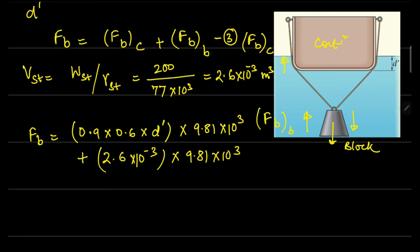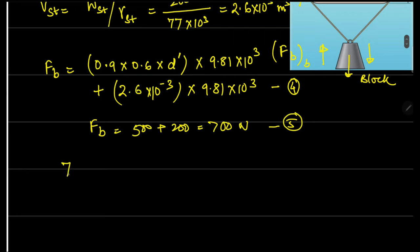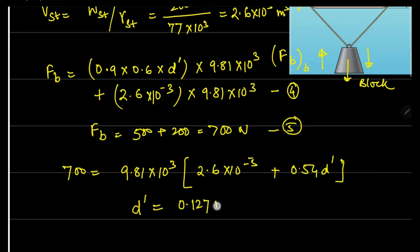The total buoyancy force equals the total weight of 700 newtons. So: 700 = 9.81 × 10³ × (2.6 × 10⁻³ + 0.54 × d'). Solving this equation gives d' = 0.127 meters.